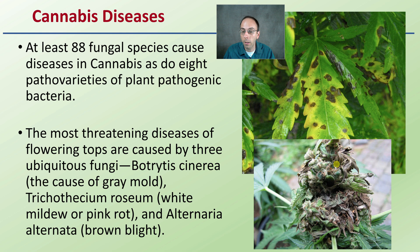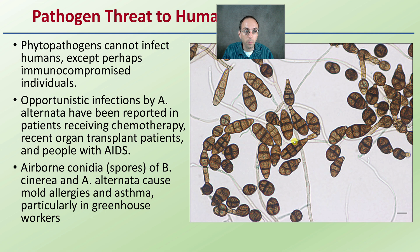We also have Alternaria, which can cause issues with plants — it tends to produce little brown circles, starting on the lower leaves and working its way up. But remember, there are also fungal species that can be microscopically involved that can still cause contamination and bad end product.